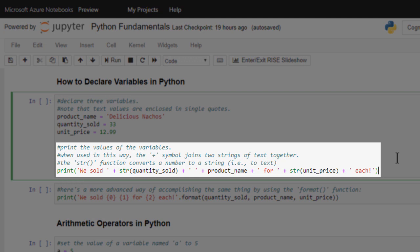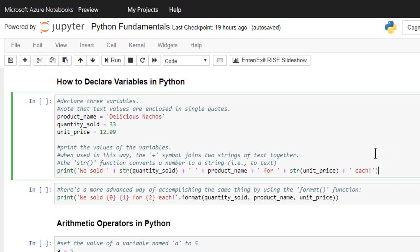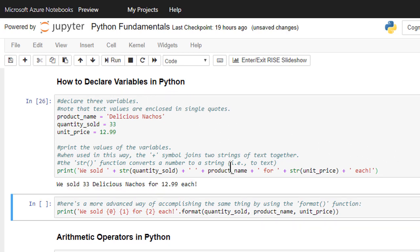Note that when used in this way, the plus symbol joins two strings of text together. This is called string concatenation. Also note that the str function is being used to convert numbers to strings, that is, to text. This allows us to print the numbers to the screen. Let's see what happens when we run this code cell. As you can see, Python prints the values of the variables to the screen.